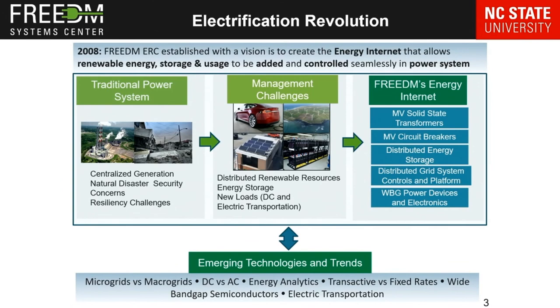By using distributed energy resources — hopefully distributed renewable energy resources — we can place the generation very close to the load. Eventually, our goal is to have all users become prosumers. We want the user to both consume electricity but also produce it through the use of renewables, for example rooftop solar or small wind type systems.